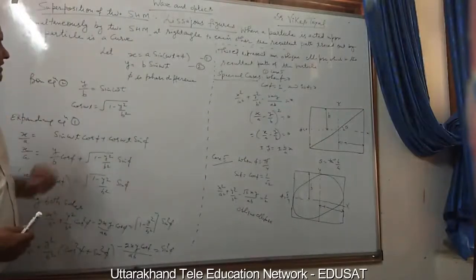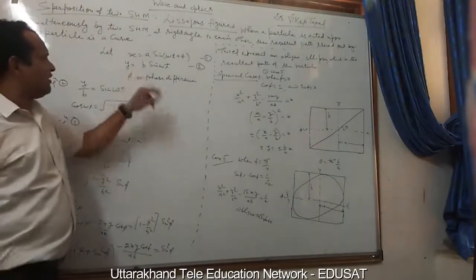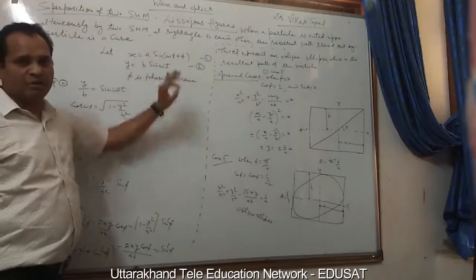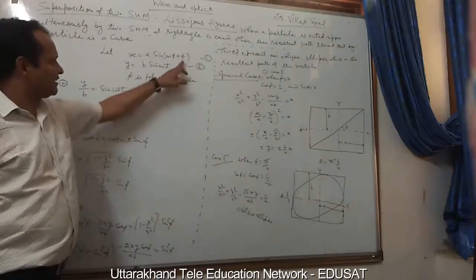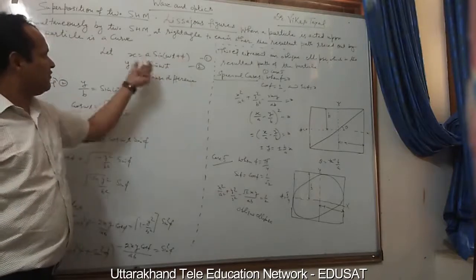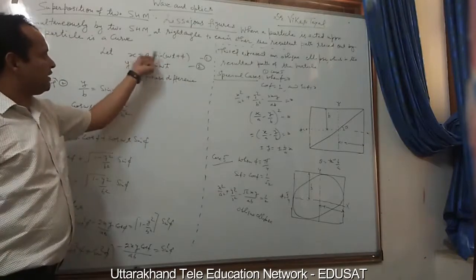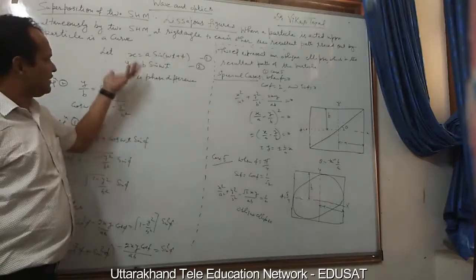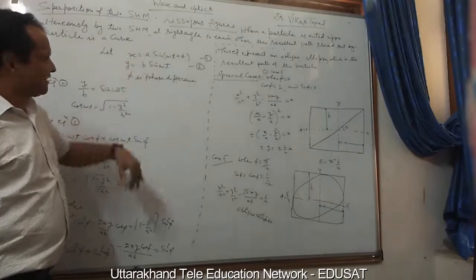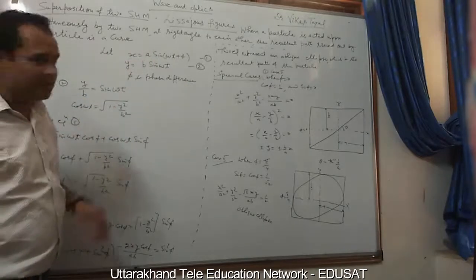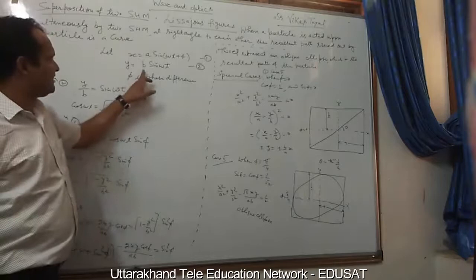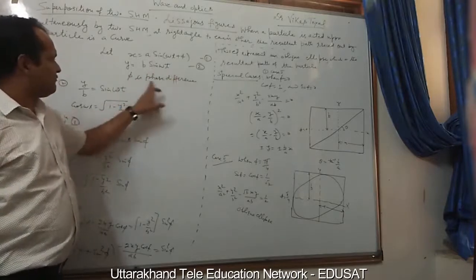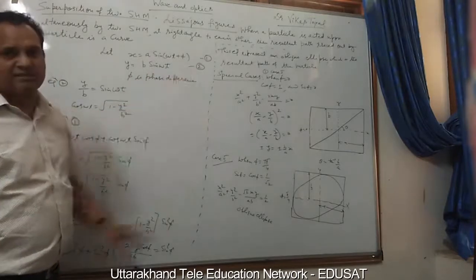For example, consider two waves: x = a sin(ωt + φ), where a is the amplitude, ω is the frequency, and t is the time. The displacement of the second wave is y = b sin(ωt), where φ is the phase difference between the two waves.